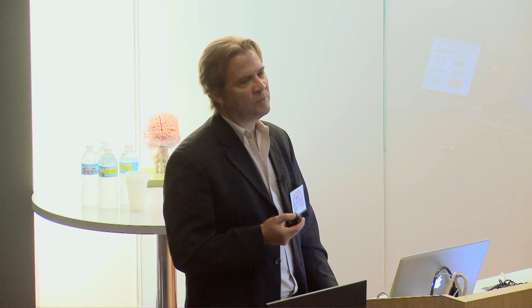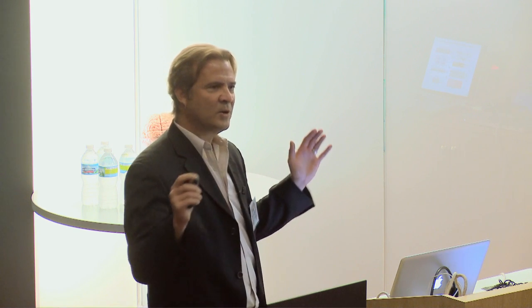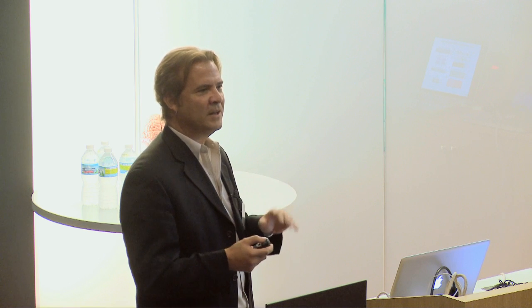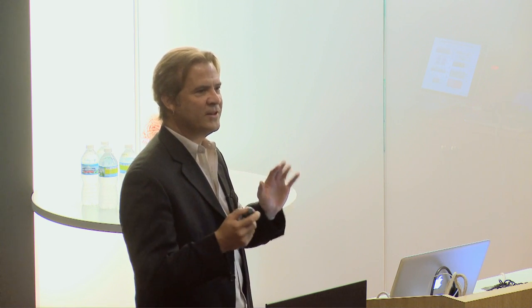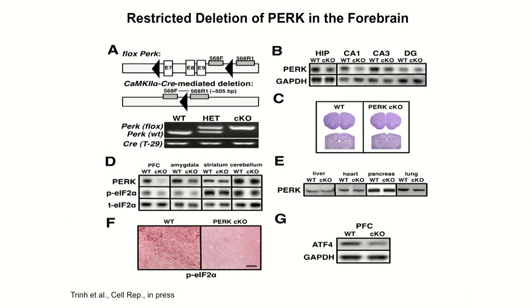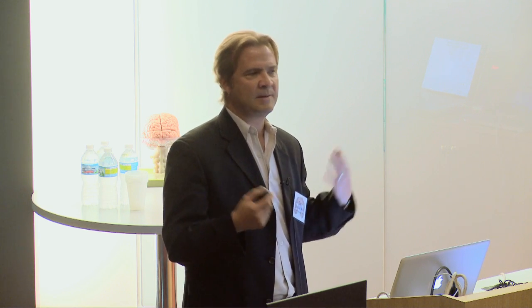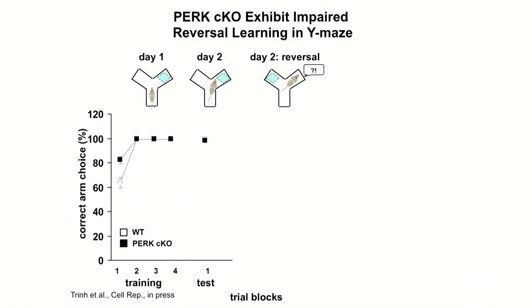We made mice with a brain-specific deletion of PERK, because knocking it out throughout the whole animal causes death before birth. These mice have a brain-specific deletion of this protein. We wanted to study normal learning and memory in these mice, and it turns out they can learn and remember just about any task we gave them. But what they can't do is the reversal learning I described before — in the water-based Y-maze, these mice can learn the task fine and remember it fine, but even more so than the other mutant mice, they basically cannot do the reversal.